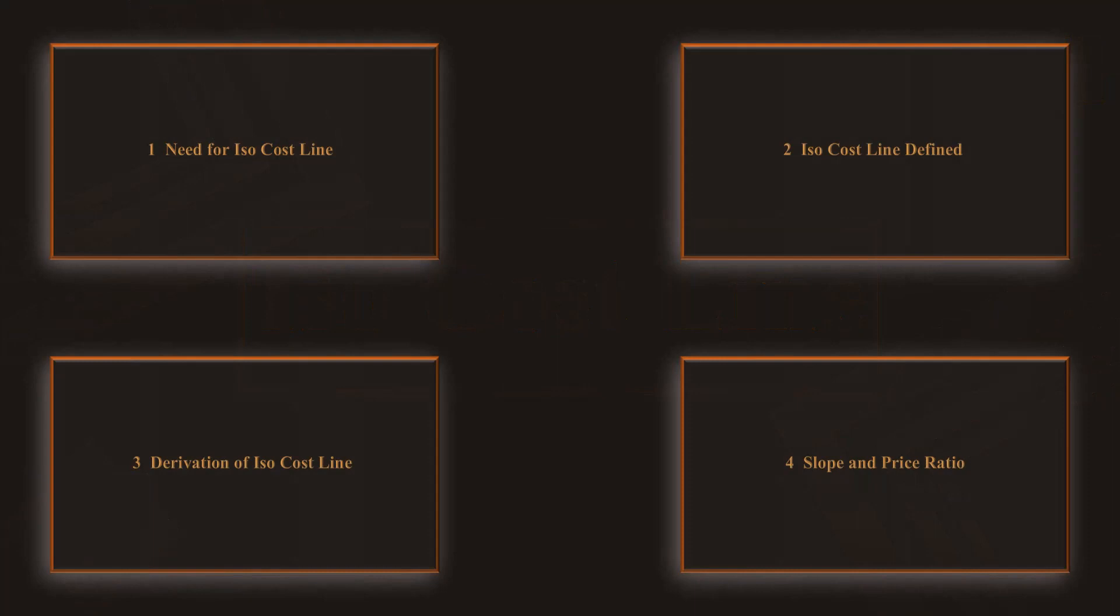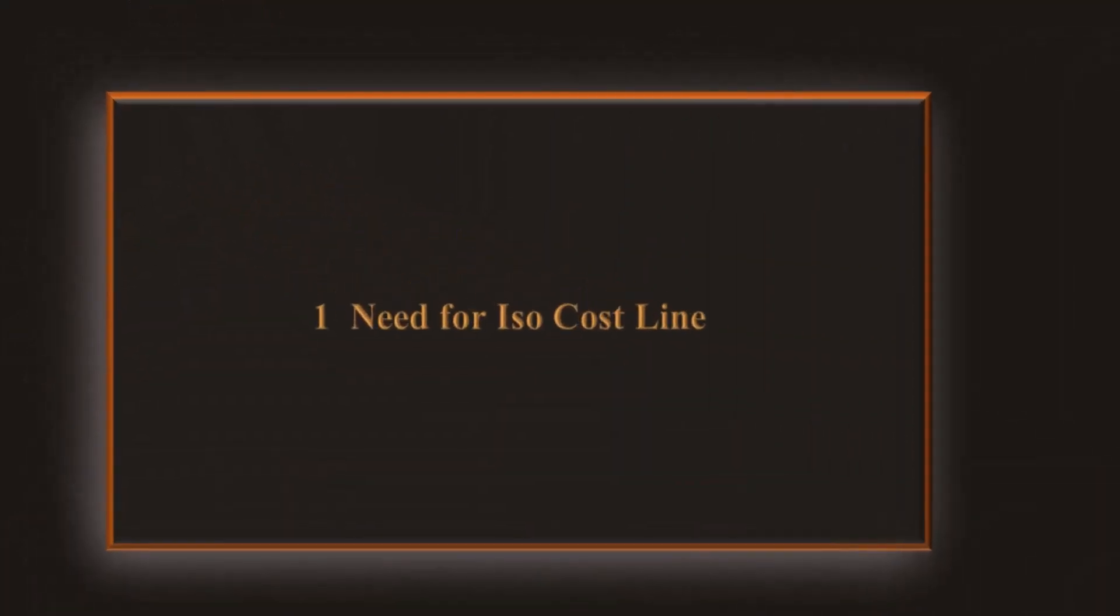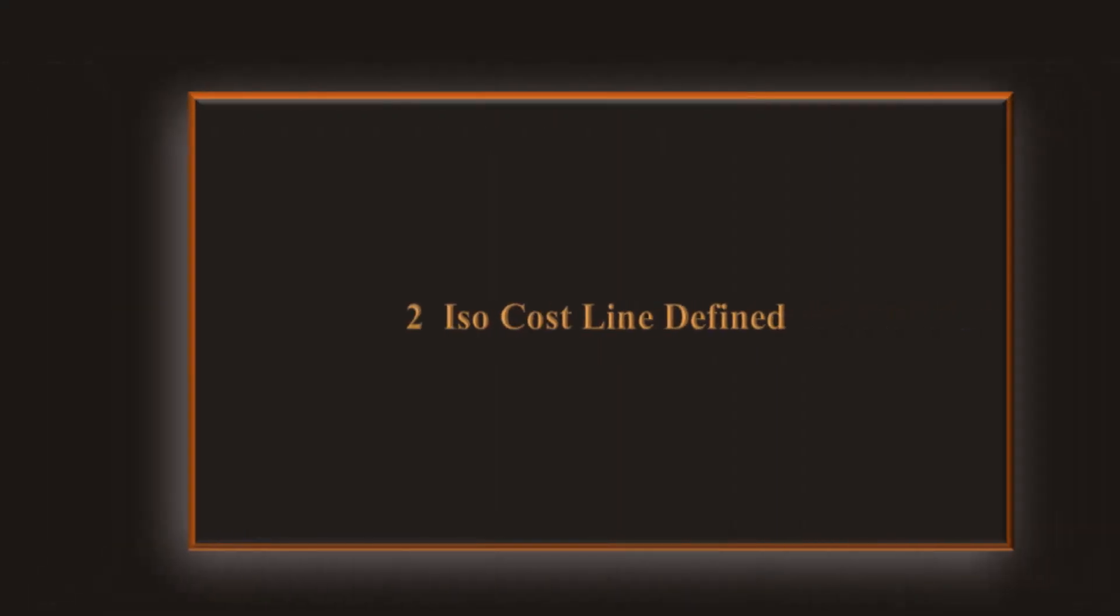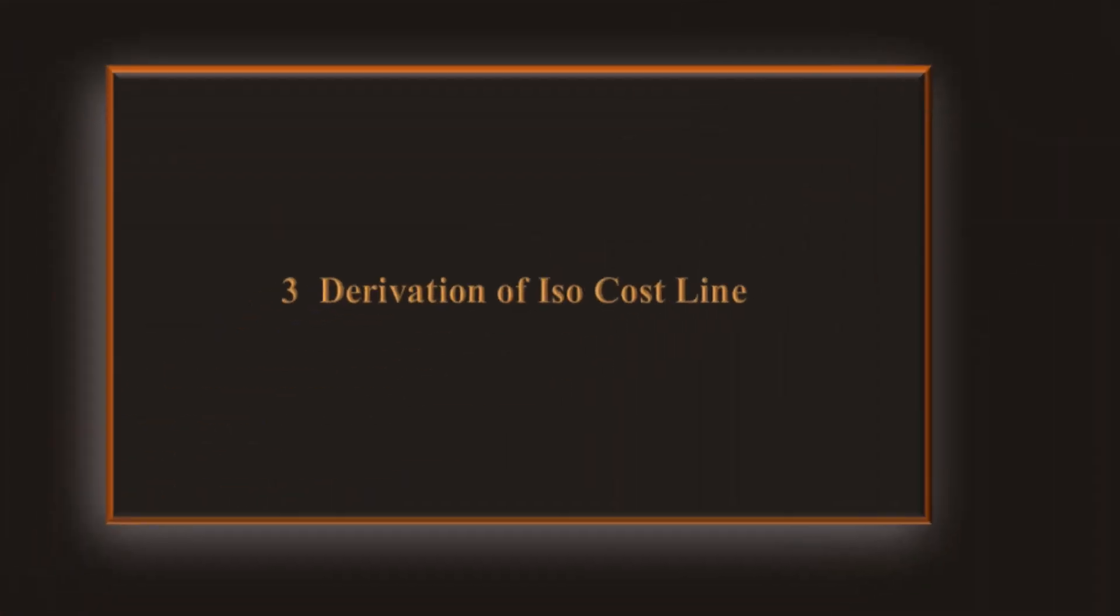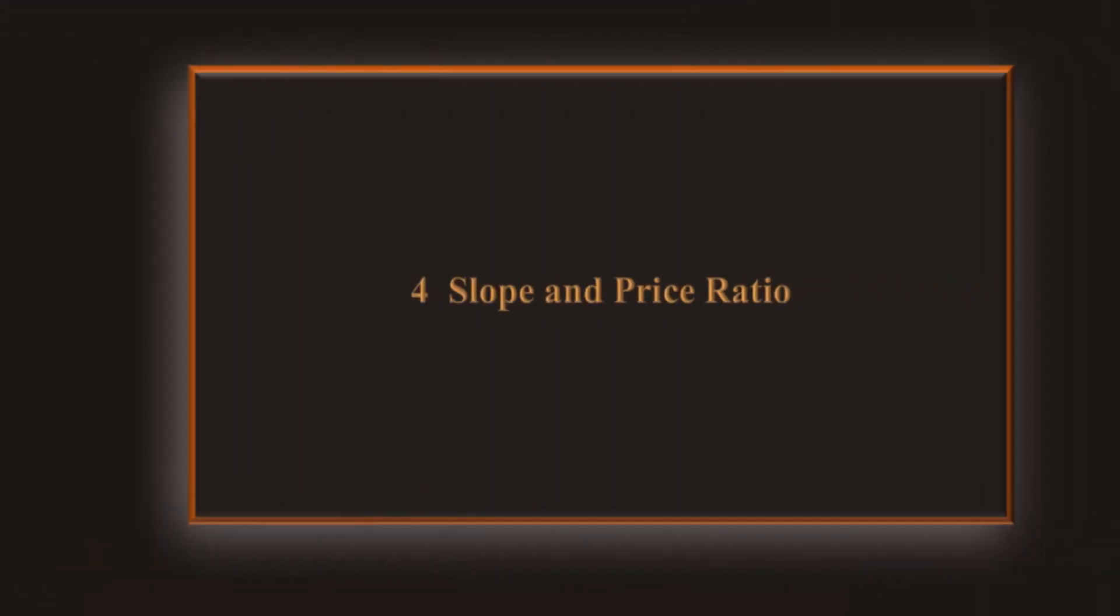We shall do it under the heads: 1. Need for isocost line, 2. Isocost line defined, 3. Derivation of isocost line, 4. Slope and price ratio.